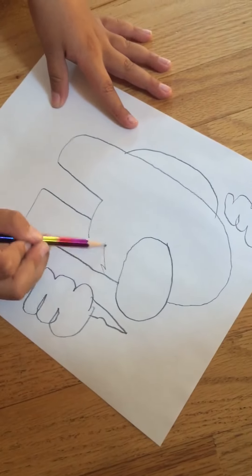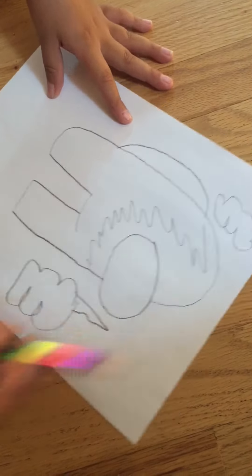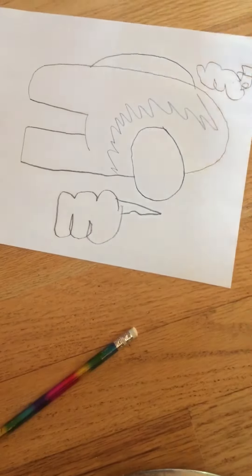And then draw a rectangle and now let's draw the mouth, let's draw the mouth like this with sharp teeth. And now it's time to color it.